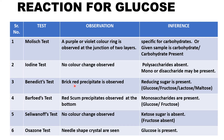Benedict's test will give you brick-red precipitates, so we can say that reducing sugars are present. It could be glucose, lactose, maltose, or fructose.